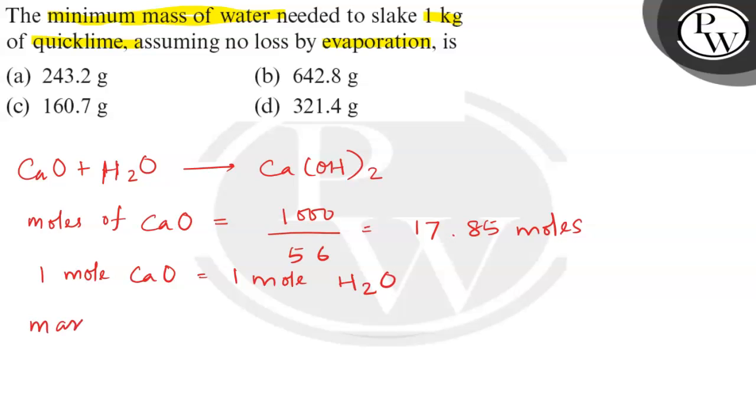Mass of H2O will be how much? Mass of H2O will be 17.85, that is the moles of CaO, into 18, that is mass of H2O. And this will be equal to 321.42 grams. 321.42 grams, that is 321.4 grams, that is option D.